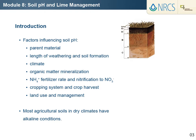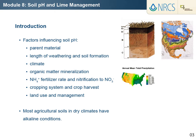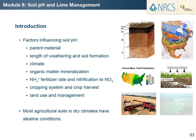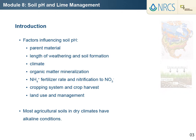Many factors influence the pH of a surface soil or subsoil. These include the parent material the soil was derived from, the length of weathering and soil formation, climate, organic matter mineralization, ammonium fertilizer rate and nitrification to nitrate, cropping system and crop harvest, and land use and management. Of the management practices for crop production, application of fertilizers or organic sources that contain ammonium, or compounds that transform into ammonium once applied to the soil, have the largest influence on increasing soil acidity.